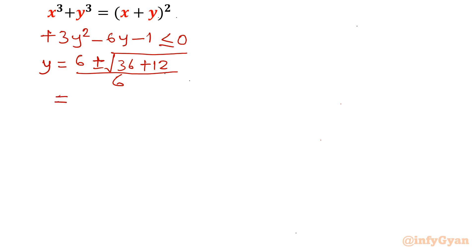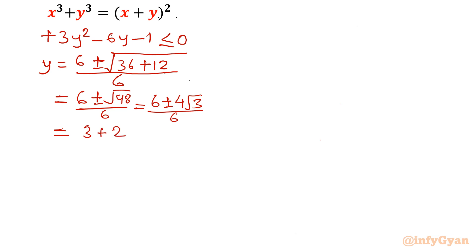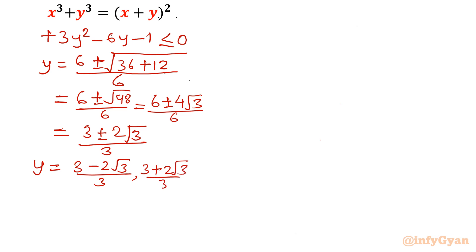So there are two roots: y equals (3 minus 2√3)/3 and y equals (3 plus 2√3)/3. Using √3 ≈ 1.732, so 2√3 ≈ 3.46. The lower bound is (3 minus 3.46)/3 ≈ minus 0.15, and the upper bound is (3 plus 3.46)/3 ≈ 2.15. Since the quadratic inequality gives y between these two values, y must satisfy minus 0.15 ≤ y ≤ 2.15.